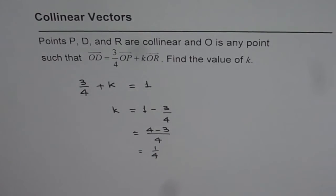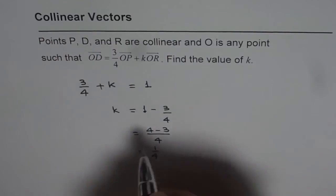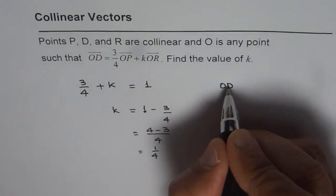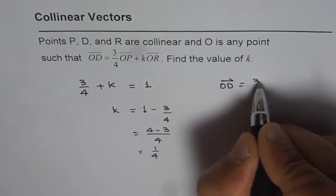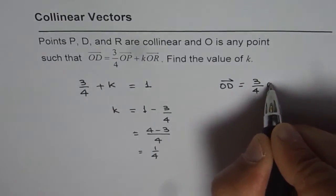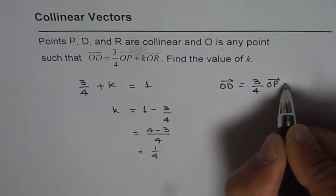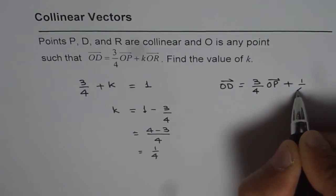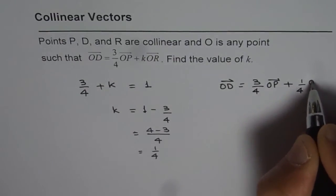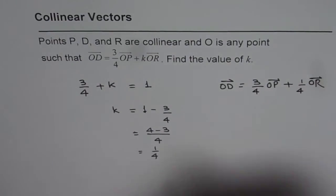K equals 1/4, and therefore we can write this vector as OD equals 3/4 of OP plus 1/4 of OR.